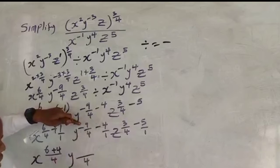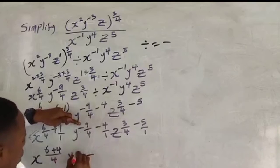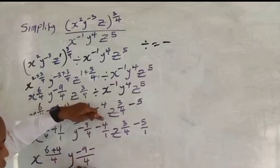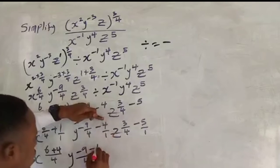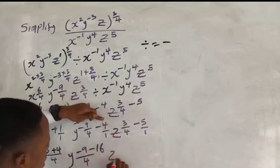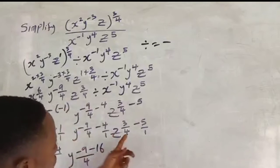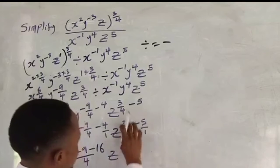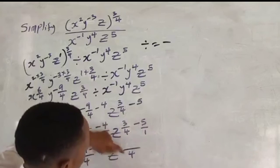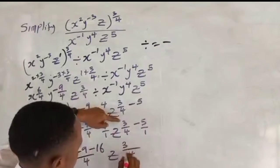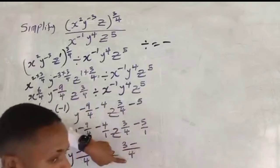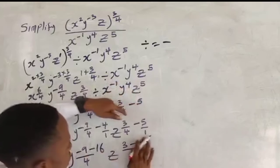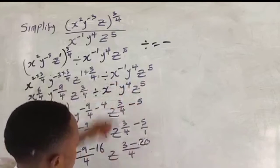For s: 4 divided by 4 is 1, times 6 gives 6; 4 divided by 1 is 4, times 1 gives 4; so s is raised to power 6 plus 4 over 4. For y: 4 divided by 4 is 1, times 9 gives minus 9; 4 divided by 1 is 4, times 4 gives 16; so y is raised to minus 9 minus 16 over 4. For z: 4 divided by 4 is 1, times 3 gives 3; 4 divided by 1 is 4, times 5 gives 20.